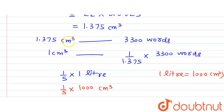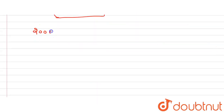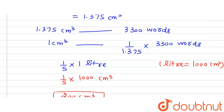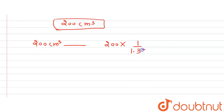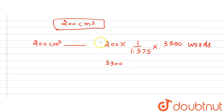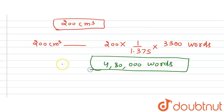So 200 cm³ of ink is available. Since 1 cm³ writes (3300 ÷ 1.375) words, then 200 cm³ will write 200 × (3300 ÷ 1.375) words. Solving this gives 3300 × 200 ÷ 1.375 = 4,80,000 words. This is the answer to our question.